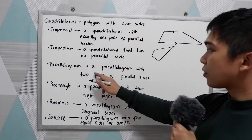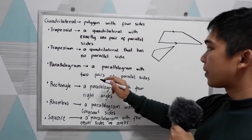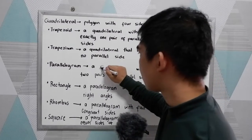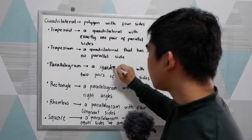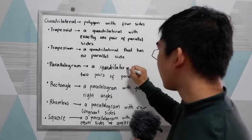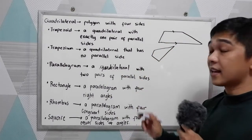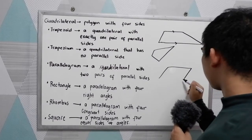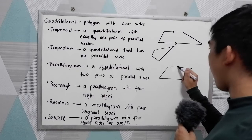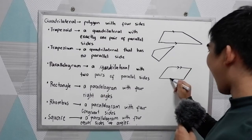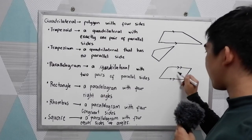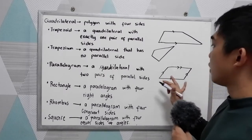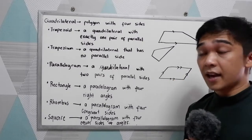Next is the parallelogram. A parallelogram is a quadrilateral with two pairs of parallel sides. So if we're going to draw one, this side is parallel to this one, and this side is parallel to this one — two pairs of parallel sides.